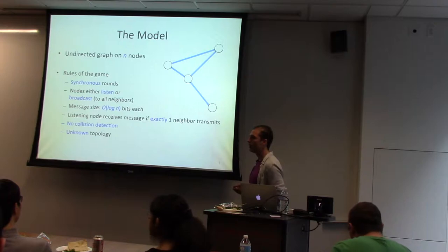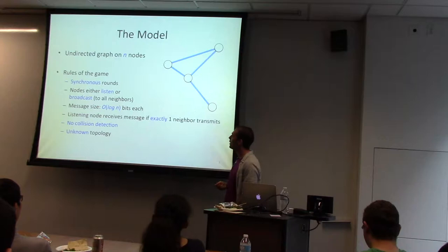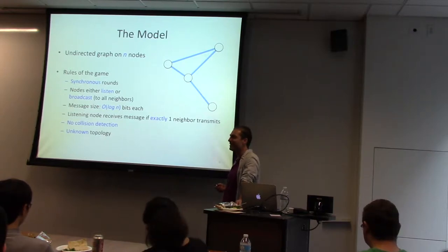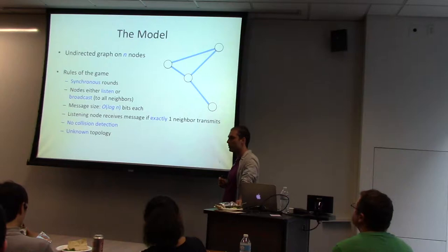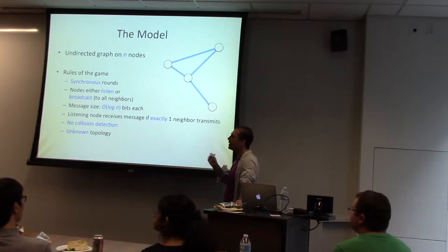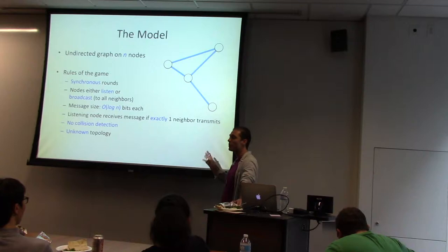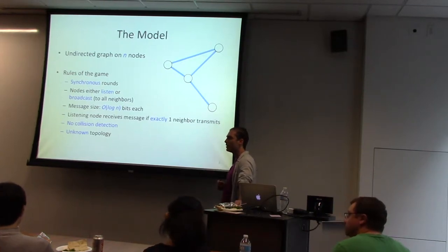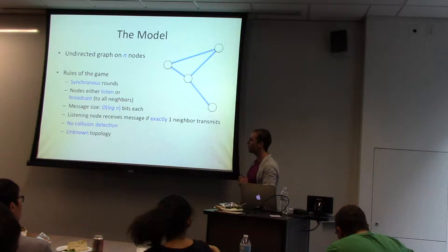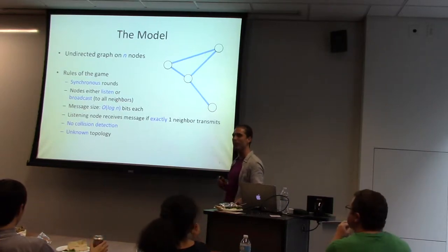Everyone has a unique identifier. We're the algorithm designers trying to build a protocol for all the nodes to be able to transmit a message. The protocol need not be identical for each node, but it will be. We can be adaptive. After you run the whole protocol, everybody should have everybody else's message.